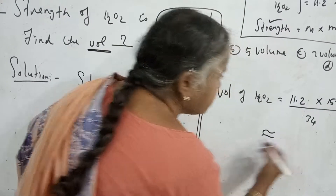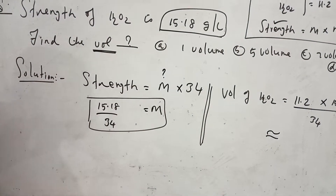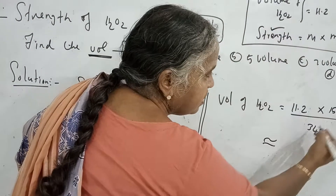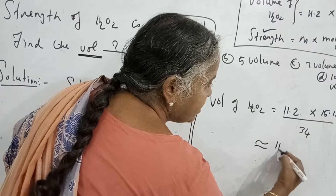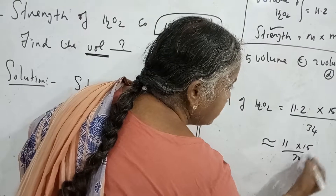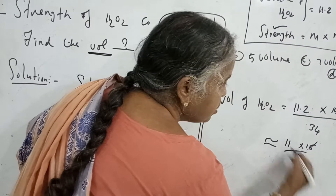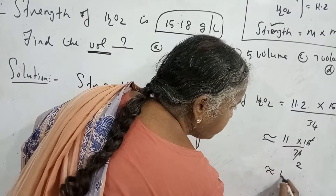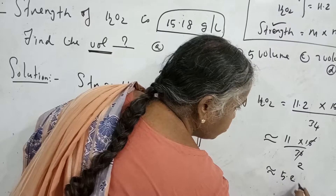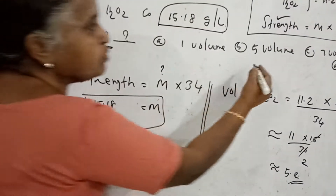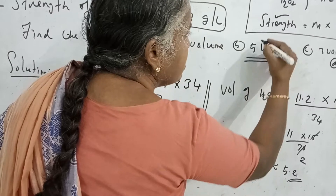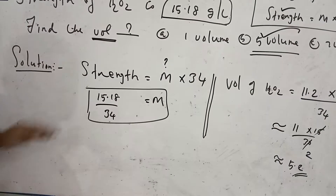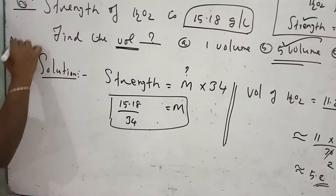Now, on approximation — whenever you are doing for the exam, you need not go into full detail. Simply write: 11 multiplied by 15, divided by 30. This gives 1 divided by 2 approximately, so 11 divided by 2 is approximately 5.2. Based on that approximation, the answer is nearly 5 volume. So the answer is 5 volume. This is from 2010.